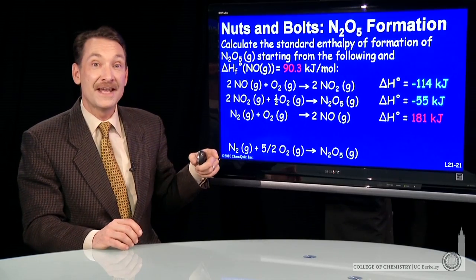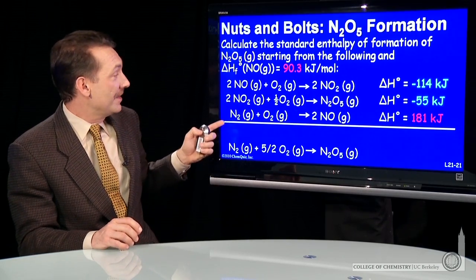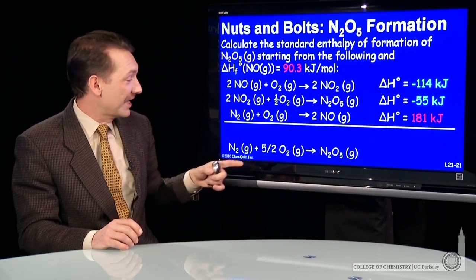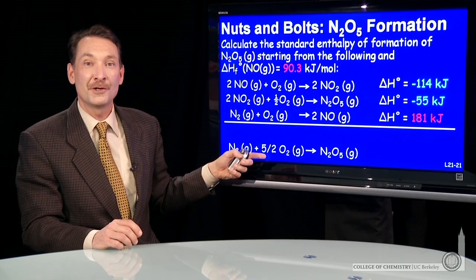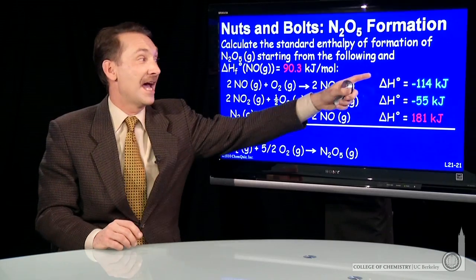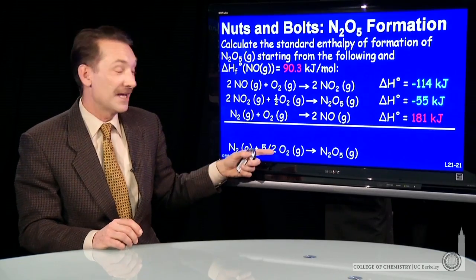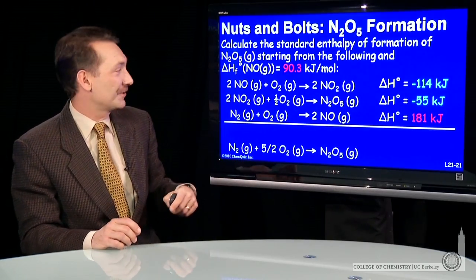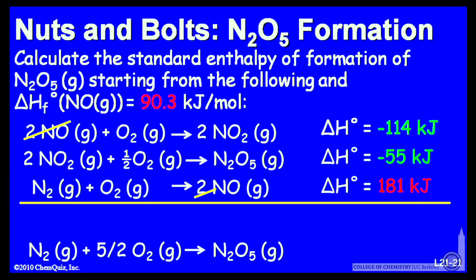And then when we add down, these three reactions add to give the reaction we're looking for. It's a Hess's law situation. I can add these three and add their enthalpies to get the enthalpy for this unknown reaction. When I add, I notice there's two moles of NO2 on both the product and reactant side. Those cancel.